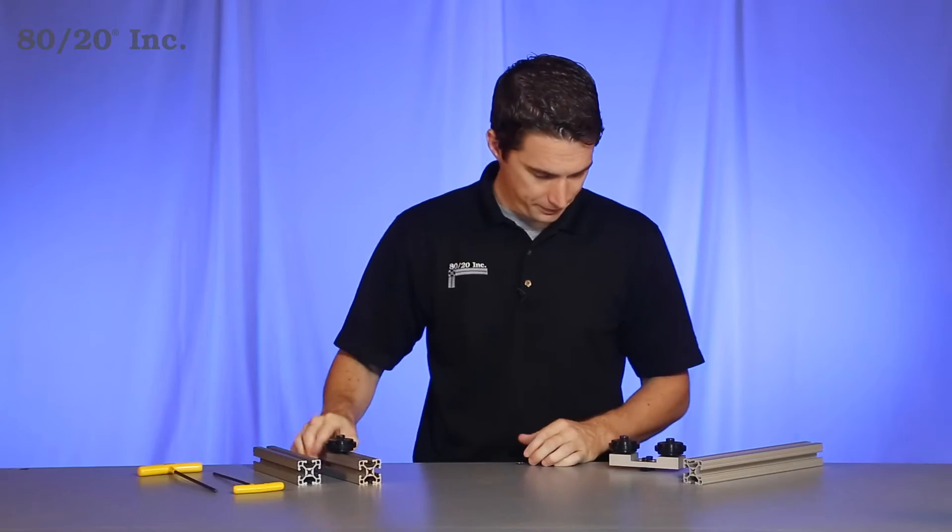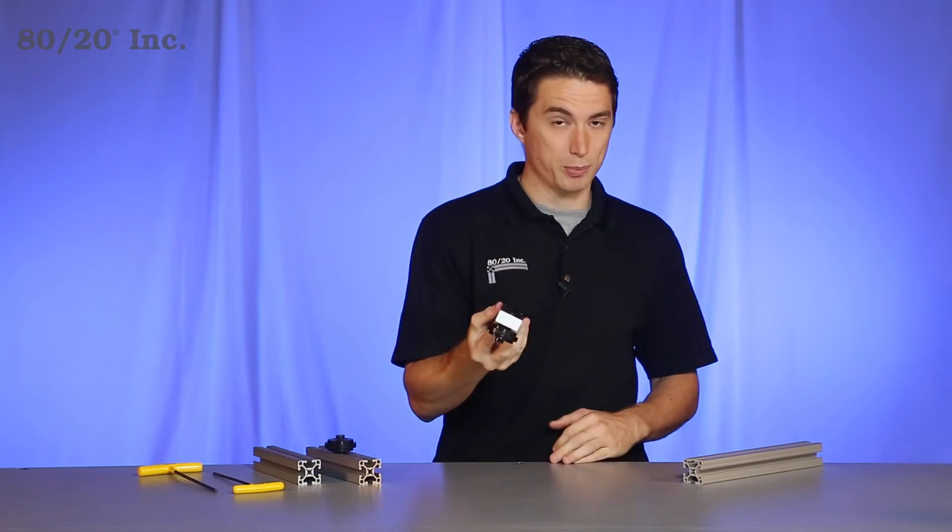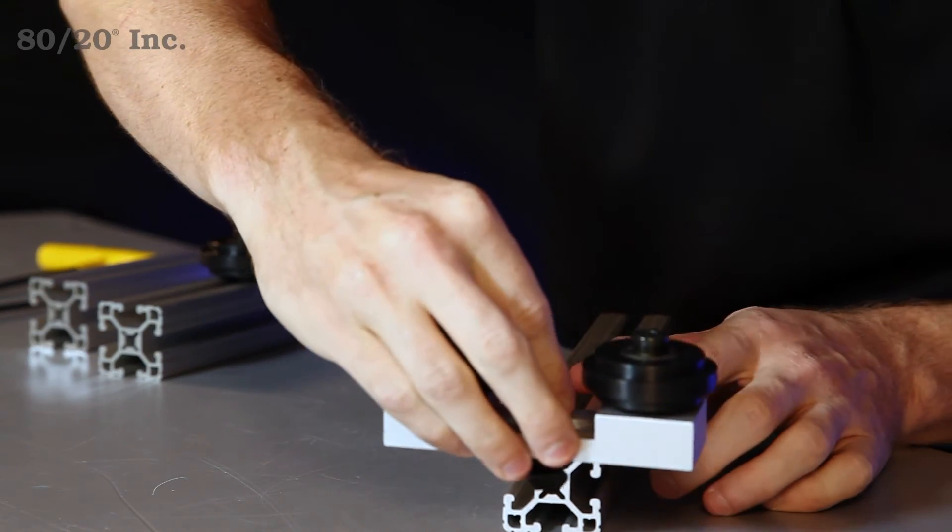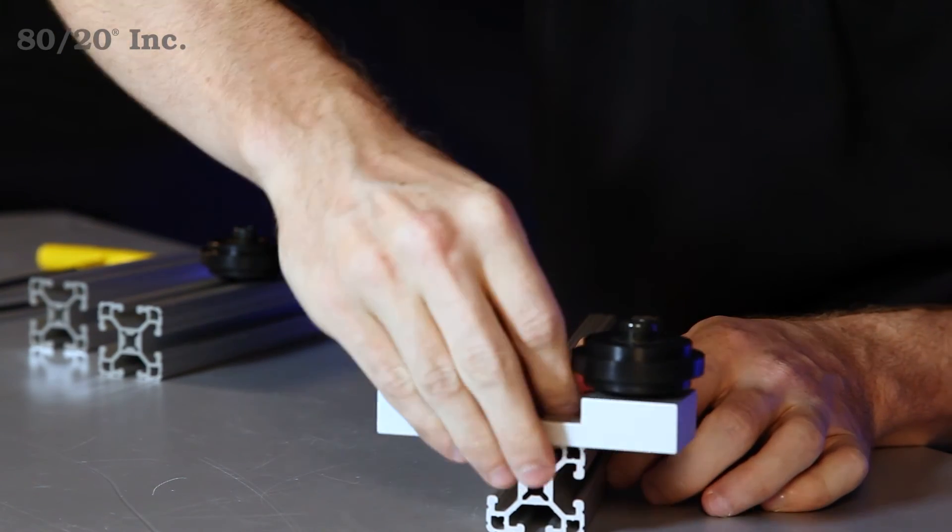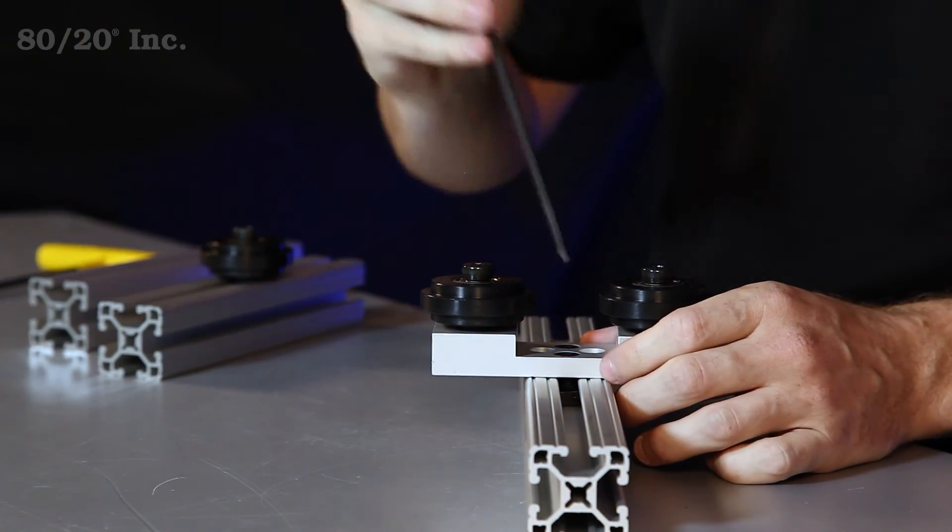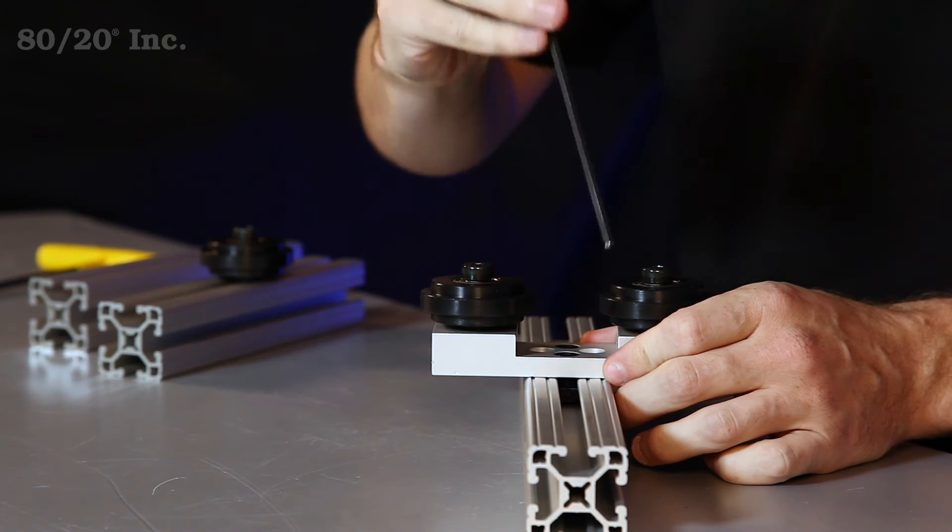Now if you're going to use a bracket, you simply take the pre-assembled part and loosen up the T-nuts. From there, you'll slide it into the open T-slot. You'll find your location you want and you'll tighten down the bolts as well.